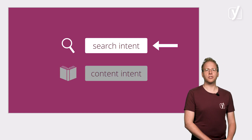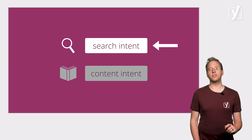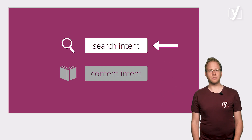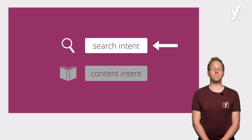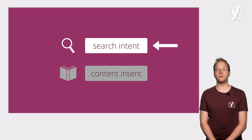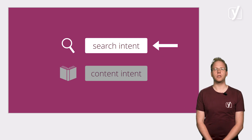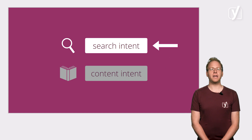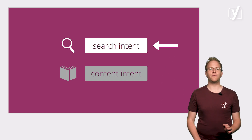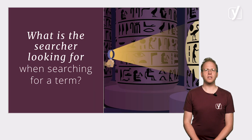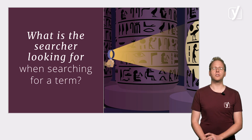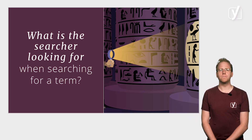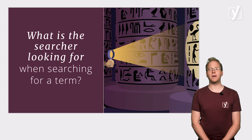Let's start with search intent. If you've paid close attention so far, this won't be difficult to grasp. After all, we've already established that you should take the perspective of your audience when crafting your keyword strategy. When it comes to creating pages, though, we need to take this a step further. We need to consider exactly what the searcher expects to find on a page when searching for a term. Only then can we craft a page which reflects those expectations.